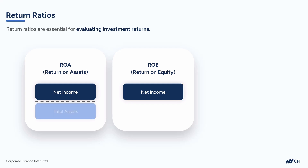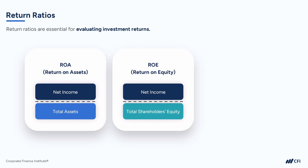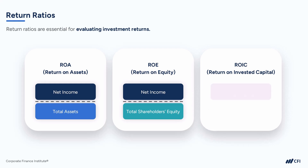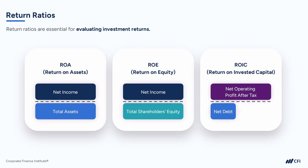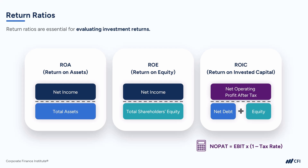We compare net income to either total assets in the return on assets ratio, or to total shareholders' equity in the return on equity ratio. Another important ratio, though less common, is return on invested capital, or ROIC. With ROIC, we aim to assess the returns not only to equity investors but to all capital providers, including debt holders. In this case, we calculate a profit figure called net operating profit after tax, commonly referred to as NOPAT. NOPAT is derived by taking EBIT (Earnings Before Interest and Tax), also sometimes referred to as operating profit, from the income statement and then multiplying it by 1 minus the tax rate.